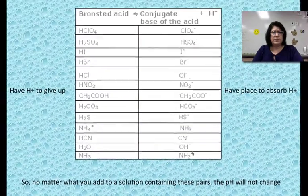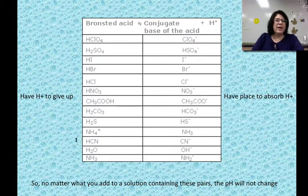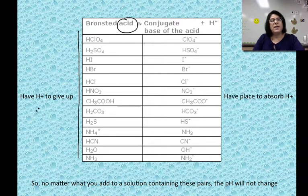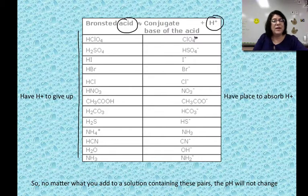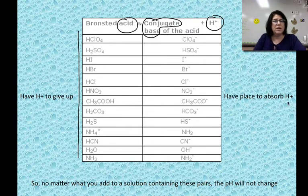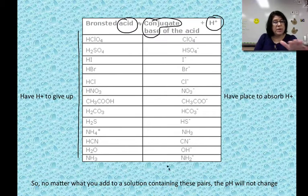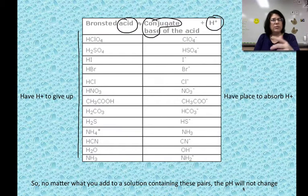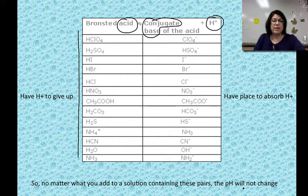Here are some examples of conjugate acids and bases. All acids by definition give up hydrogen ions. The other side shows what's left over after they've given away their H's — that thing is called the conjugate base, able to absorb a hydrogen ion or act as a base. Each time, the hydrogen leaves and there's a negative particle left behind. If you have these pairs present in a solution, no matter what happens with pH, it's going to remain stable — these molecules will respond and maintain the pH at the needed level.